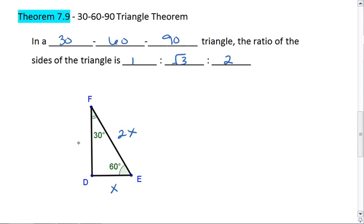Let's say I told you that this smallest side here was 5. Well, then we know that the other leg is 5 times the square root of 3. And the hypotenuse is 5 times 2, which is 10.